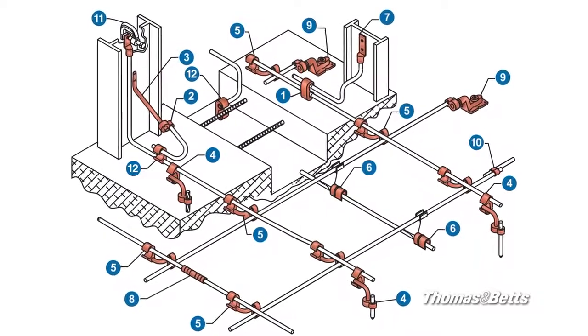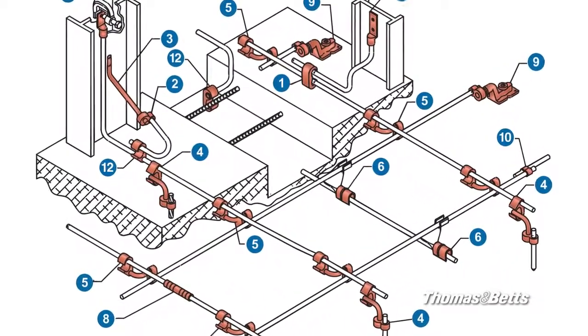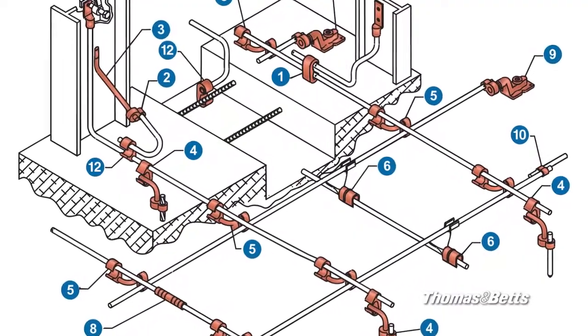For data centers, Thomas and Betts offers the Easy Ground System with its complete line of tools, lugs, and grid ground compression connectors.